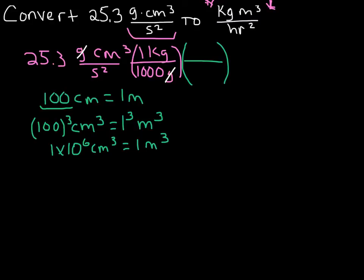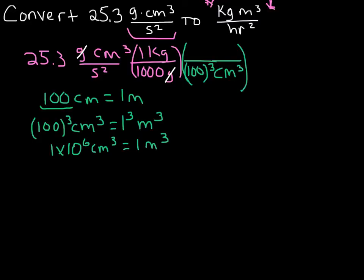So to convert from centimeters cubed to meters cubed, centimeters cubed is going to be on the bottom. We're going to have 100 cubed centimeters cubed on the bottom, and one cubed meters cubed on the top. I'm writing that one cubed so it makes it really clear what we're doing — of course, one to the third power is still just one. Now let's cancel out our centimeters cubed. That cancels out, and now we are in meters cubed.